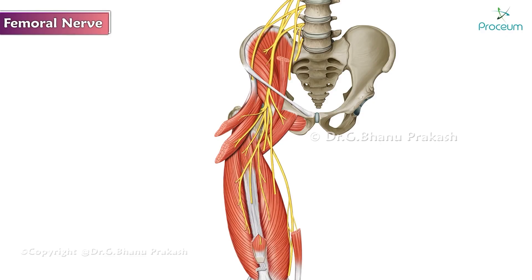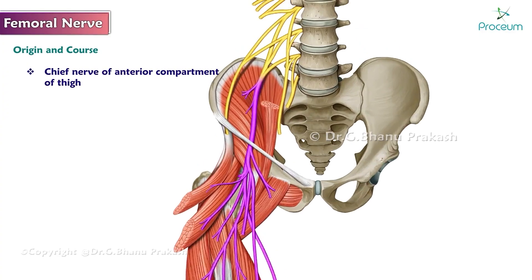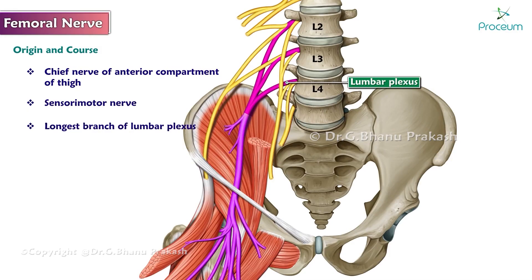Femoral nerve: origin and course. The femoral nerve is the chief nerve of the anterior compartment of the thigh. It originates from the lumbar plexus, arising from the posterior divisions of the anterior rami of spinal nerves L2 to L4. It is a sensorimotor nerve and the longest branch of the lumbar plexus.